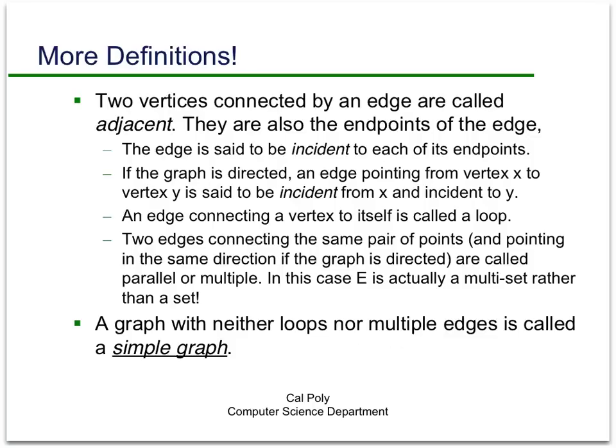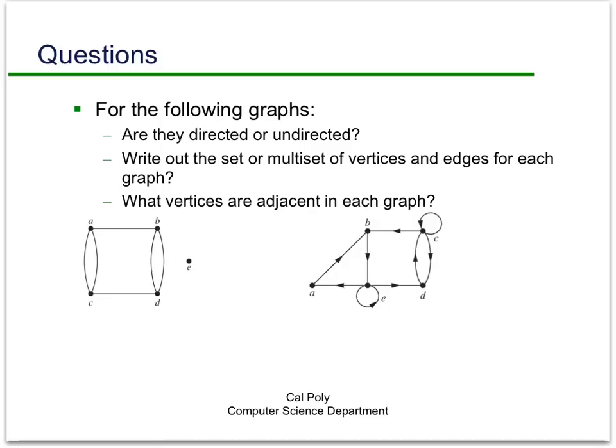Here are a couple graphs for you to think about. From the picture I haven't written formally the vertex set or the edge set, but are they directed or undirected? Write out the set or multi-set of vertices and edges for each graph, and what vertices are adjacent to each other in each graph. Just to get you started, this graph over on the left has five vertices, and there are no edges that are incident to e. But there are a couple of edges between a and c, an edge between c and d, et cetera. This graph, as you can see, has arrows in it.